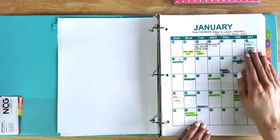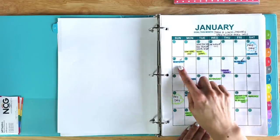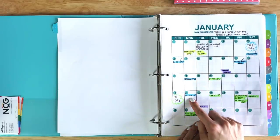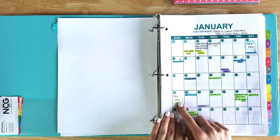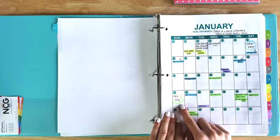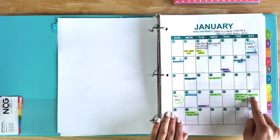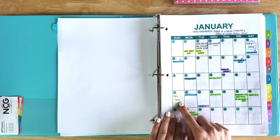My paycheck on the 5th is highlighted in blue. Everything highlighted in blue on my calendar is what I'm going to be paying with that paycheck. My paycheck on the 20th is highlighted in green. I pay all of the different bills highlighted in green with that paycheck.